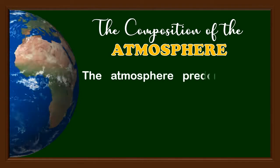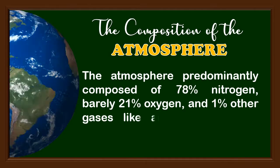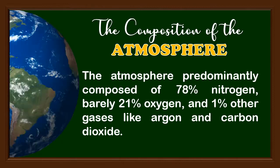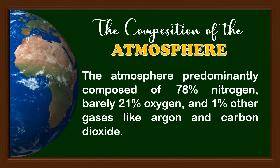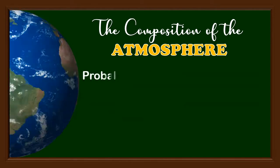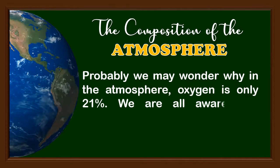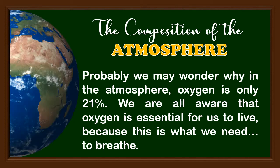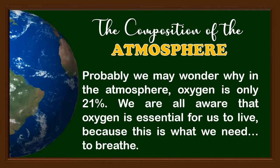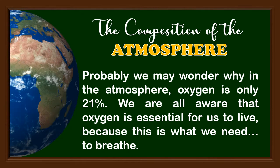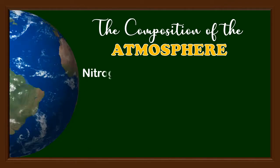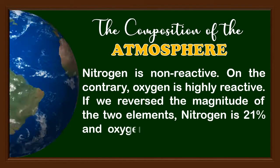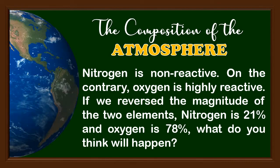The atmosphere is predominantly composed of 78% nitrogen, barely 21% oxygen, and 1% other gases like argon and carbon dioxide. We may wonder why oxygen is only 21%, since oxygen is essential for us to live — it is what we need to breathe. Nitrogen is non-reactive; on the contrary, oxygen is highly reactive. If we reversed the magnitude of the two elements — nitrogen at 21% and oxygen at 78% — what do you think will happen?